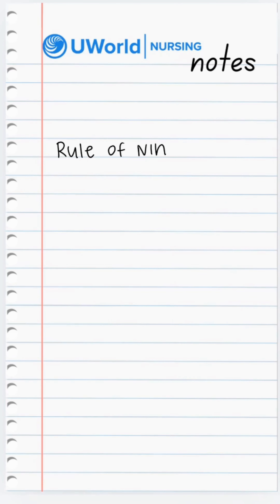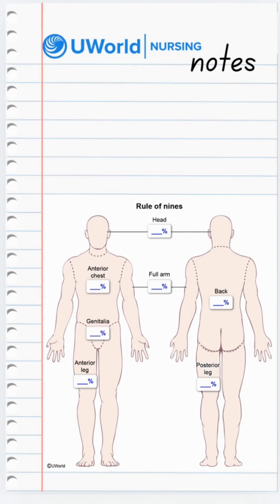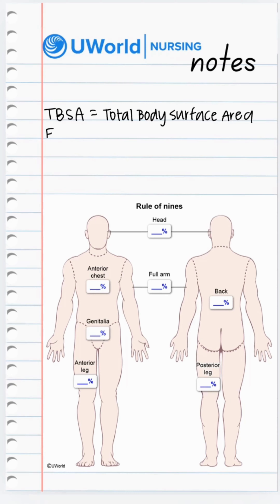Welcome to the Rule of Nines with UWorld Nursing. The Rule of Nines is used to calculate the total body surface area impacted by a burn injury. This number is then used in formulas such as the Parkland formula to calculate the appropriate volume for fluid resuscitation.